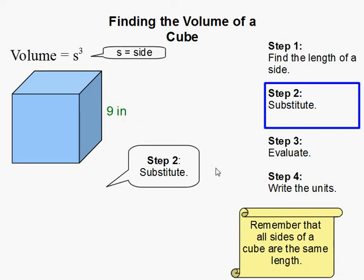Then we simply substitute the value into the equation. The equation is side to the third power, so we substitute our 9 into here.